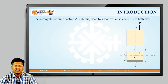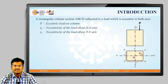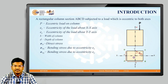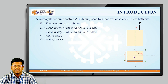If we distribute the column base into four quadrants, the load P will exist in the first quadrant near to C. Here P is the eccentric load on the column. There are two eccentricities involved: the first eccentricity is E_x, that is the eccentricity of the load about the X-X axis, and the second eccentricity is E_y, that is the eccentricity of the load about the Y-Y axis. The basic dimensions are B equal to width of column and D equal to depth of column.